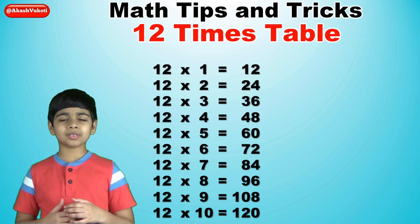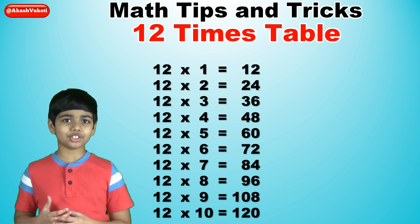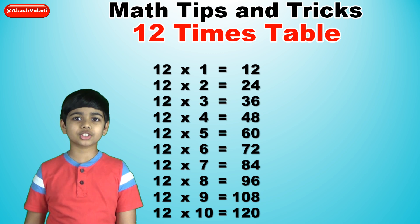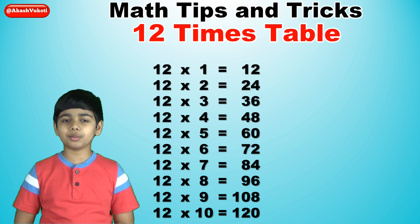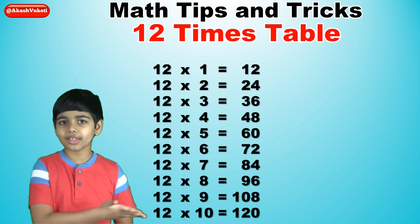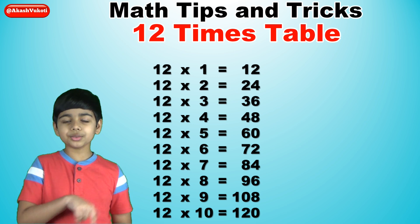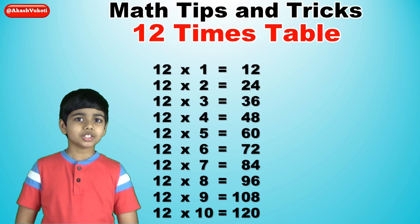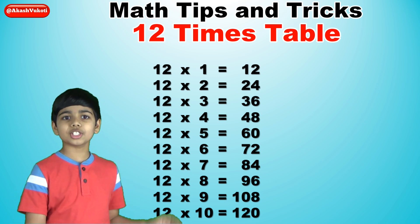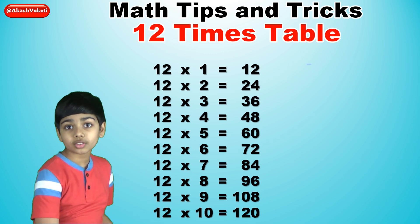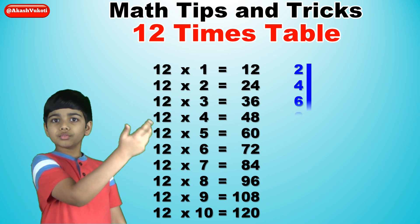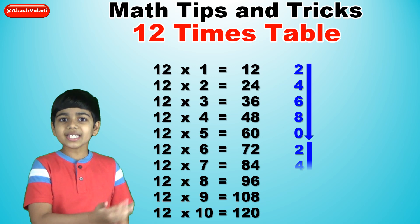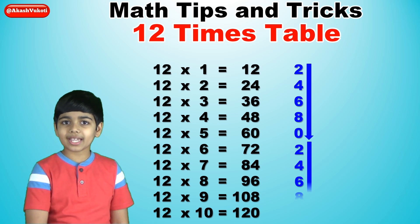Let's begin with the 1s digits. All you have to do is just write the 2 times table from 2 to 8 right there. Then we just add a 0 for 10, just 2 times 5. So now we do this twice over. So now we have 2, 4, 6, 8, 0 repeated twice at the back.